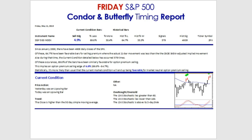Since January of 2000, we've had roughly 4,609 daily closes of the S&P 500. Of those 4,609, 64.7% have been favorable bars for selling options premium, where the actual 21-bar subsequent movement was less than what was being implied by the option prices.